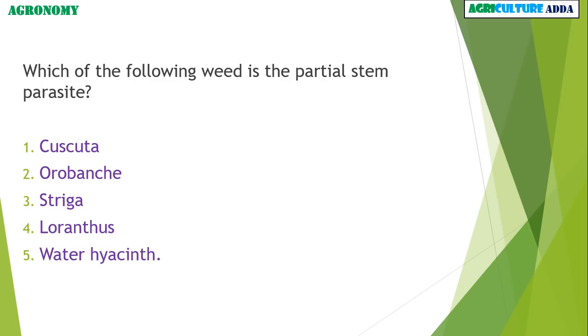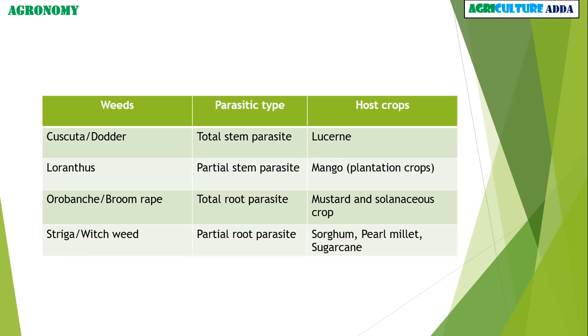Which of the following weeds is the partial stem parasite? Cascuta, Orobanche, Striga, Loranthus, or Waterhyacinth? The answer is Loranthus.